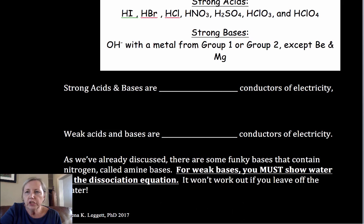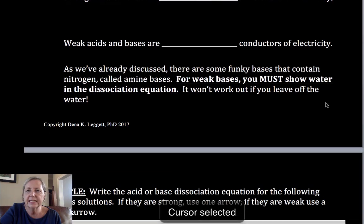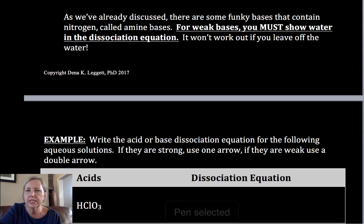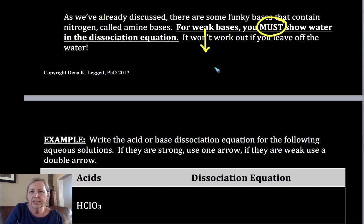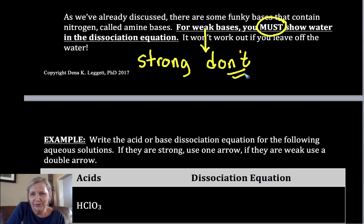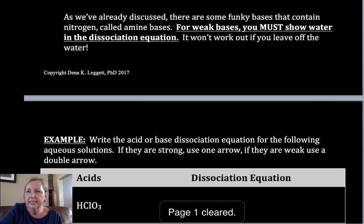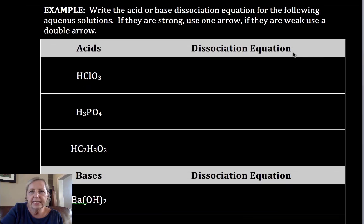Now what we're going to do next is show how we write these as dissociation reactions. If you are dealing with weak bases, you must, you must, you must show water in the dissociation. Honestly, if you're dealing with strong bases, don't show water or you'll get confused. All else, it really depends. You'll see it both ways and you need to be familiar with both ways of doing this. So let me show you some examples and hopefully that will help clear up what I'm saying.